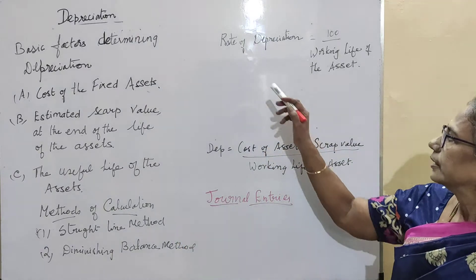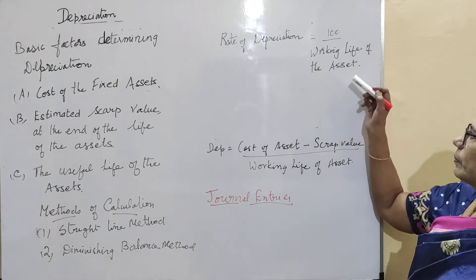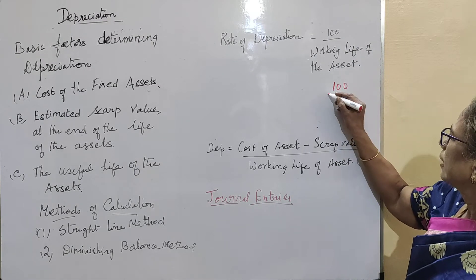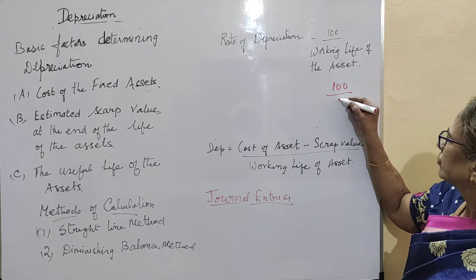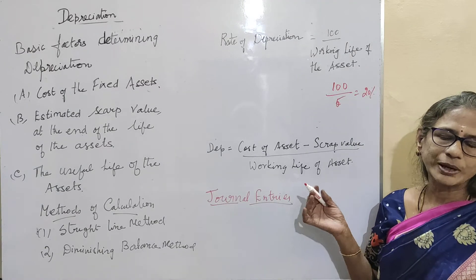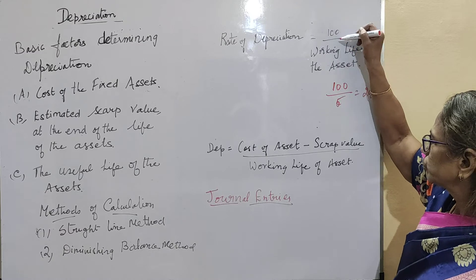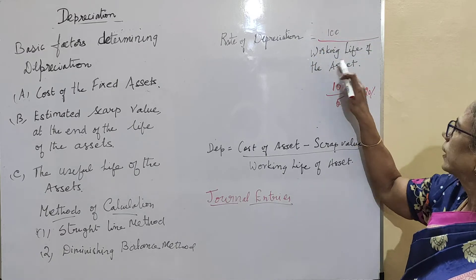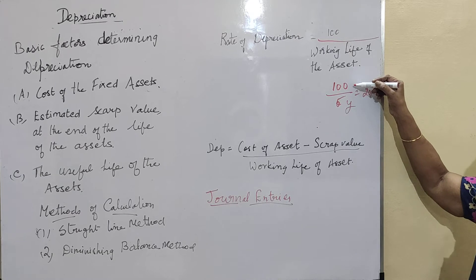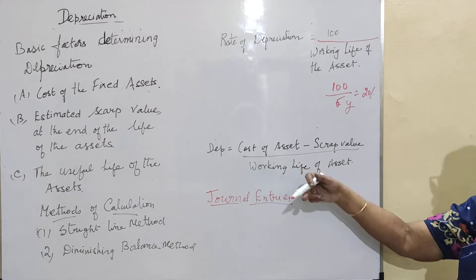Next, let us see how to calculate the rate of depreciation. The rate, meaning percentage, is calculated as 100 divided by the working life of the asset. For example, if the working life is five years, then 100 divided by 5 equals 20, meaning the rate of depreciation is 20 percent.